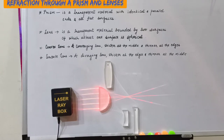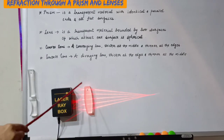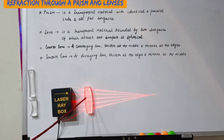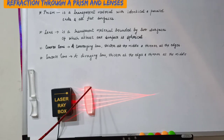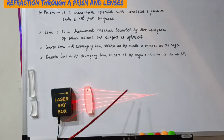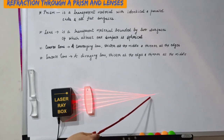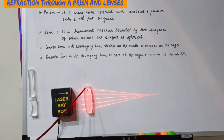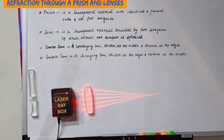This is a biconvex, or simply a convex lens. When parallel rays of light fall on this lens, after refraction they meet at a point, and this point is called the focus. So a convex lens is called a converging lens and it has a real focus.